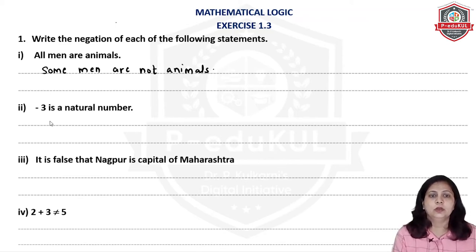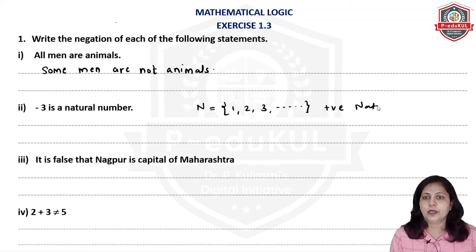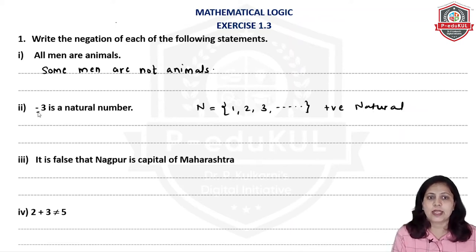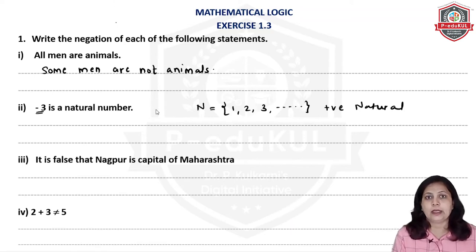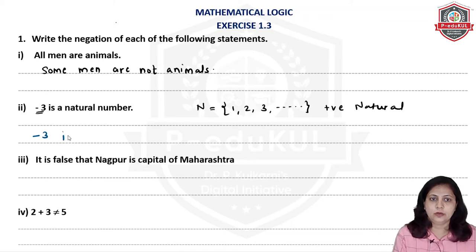The next statement is: 'Minus 3 is a natural number.' You all know that natural numbers start from 1, 2, and go on infinitely, and all natural numbers are positive. So minus 3 is not a natural number — this is a false statement. We don't write true-false here; we write the negation. So the negation is: 'Minus 3 is not a natural number.'